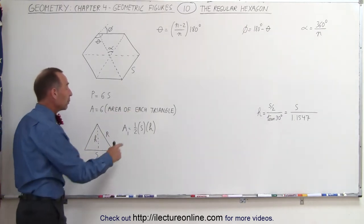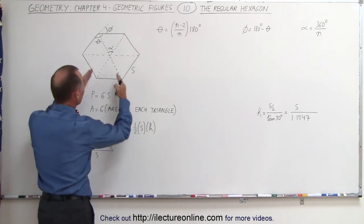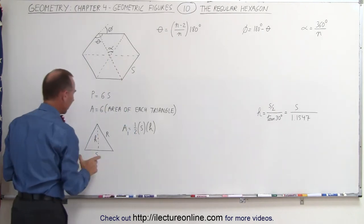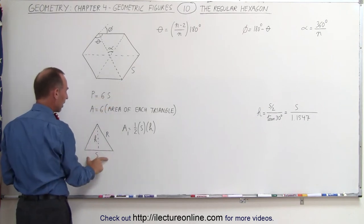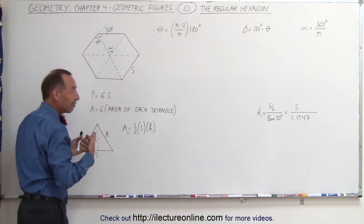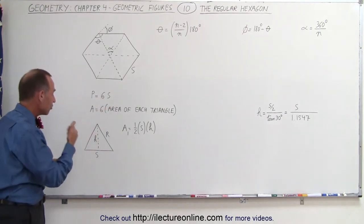Of course, the area of each of the triangles will be one-half the base times the height. If I take one of these triangles, I can see that the base is going to be equal to the side of the regular hexagon. The height is h, and we'll have to find some relationship between h and s.